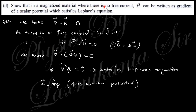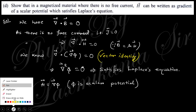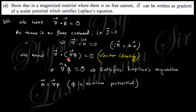In a magnetized material where there is no free current, H can be written as the gradient of a scalar potential which satisfies the Laplace equation. You know that divergence of B equals zero and B = μH, so divergence of H is also zero. Using the vector identity that the divergence of a gradient is zero, by comparison, H can be written as a scalar potential which satisfies the Laplace equation.